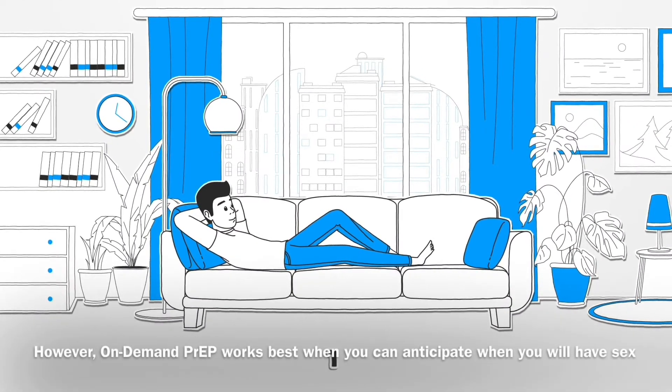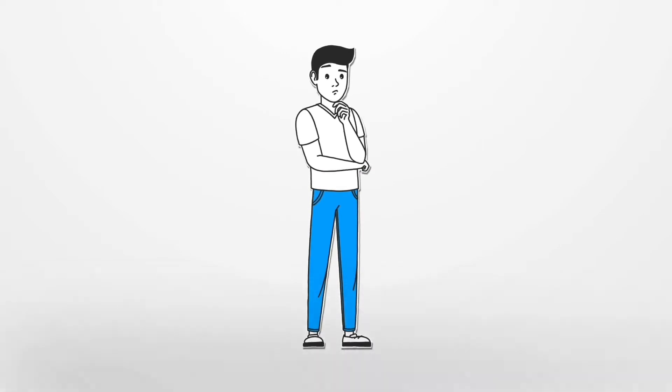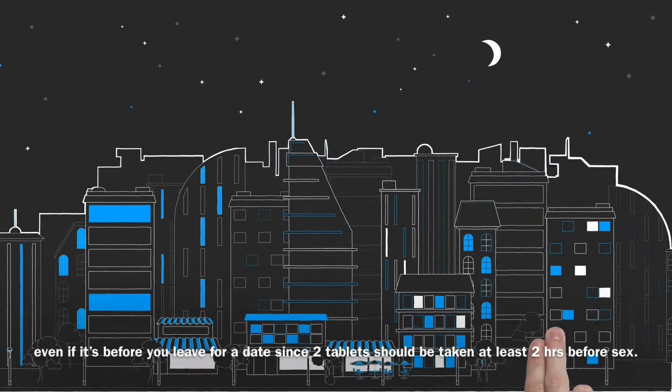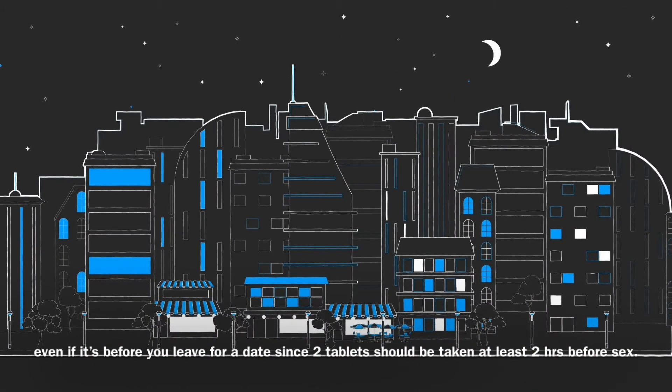However, on-demand PrEP works best when you can anticipate when you will have sex, even if it's right before you leave for a date, since two tablets should be taken at least two hours before sex.